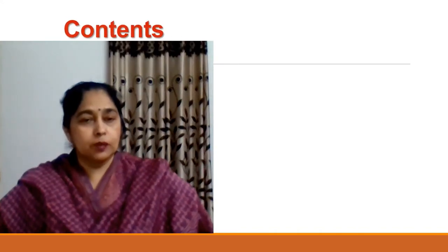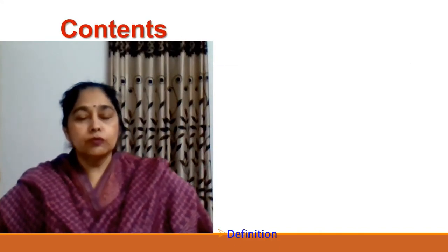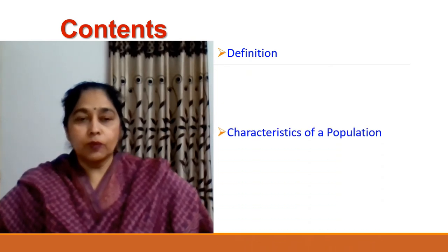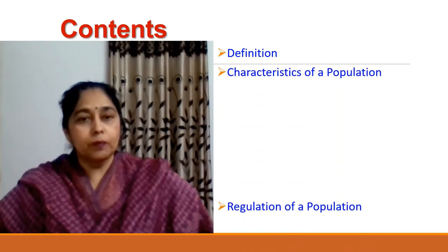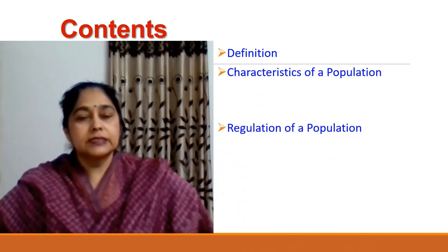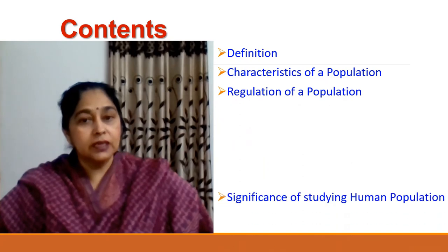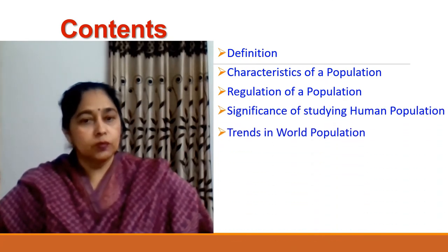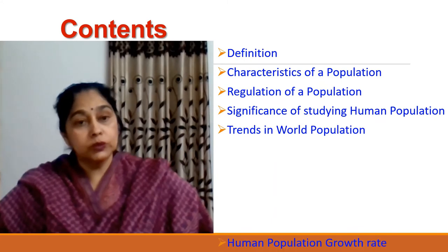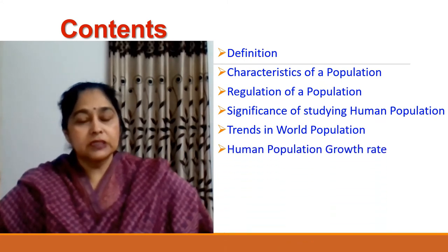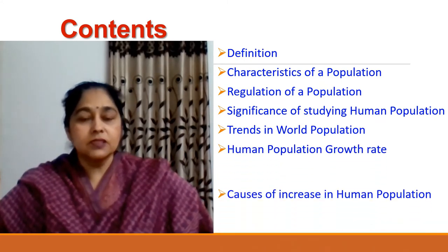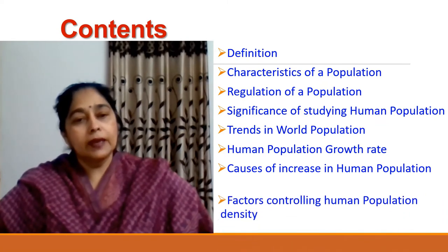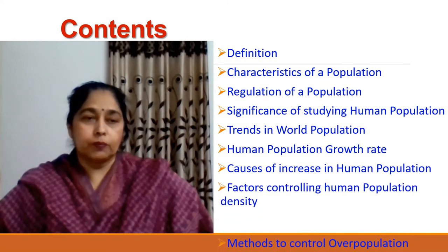After completing this chapter, you will be able to define the population, characteristics of population, regulation of a population, significance of studying human population, trends in world population, human population growth rate, causes of increase in human population, factors controlling human population density, and methods to control overpopulation.